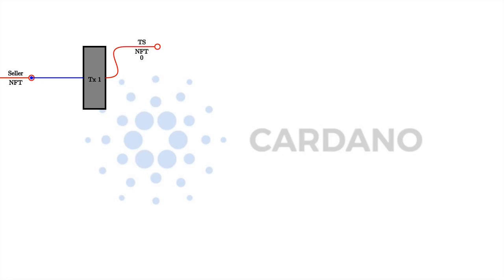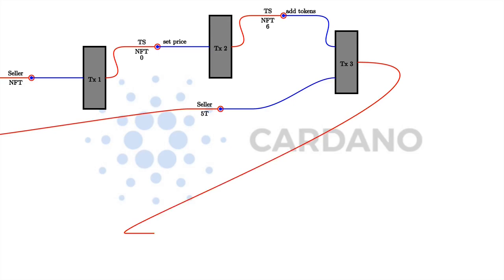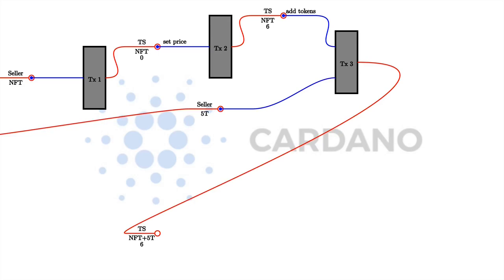There will be several operations that the seller can do. One is setting the price to a different value — the seller needs to submit a transaction that has the current UTXO as input and the updated UTXO as output, where the datum has been changed to a different price. In this example, the seller sets the price to six ADA per token. Another thing the seller can do is lock some tokens in the contract. To do that, he creates a transaction with as input the contract UTXO and a UTXO containing some tokens he owns, and as output just the updated UTXO at the contract address which now contains the provided tokens as well. In this example, the seller provides five tokens to the contract.